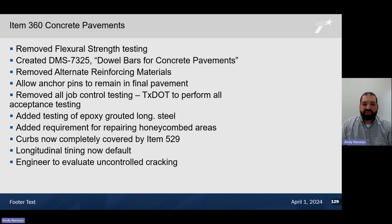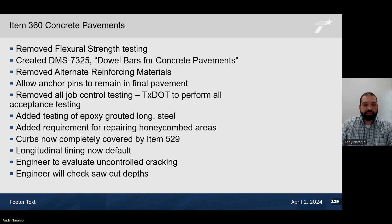The engineer will also have the ability to evaluate uncontrolled cracking. Generally, uncontrolled cracking happens when you either have shallow saw cutting or late saw cutting. Especially in CRC pavement, some of the uncontrolled cracking does not have reinforcing steel to handle that cracking. Therefore, we'll need to investigate why it cracked and what is the proper repair strategy. In addition, the engineer will check saw cut depths per the new TEX 423 test procedure part 3.